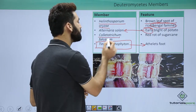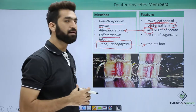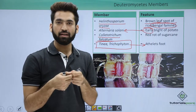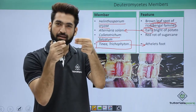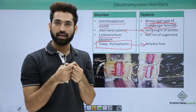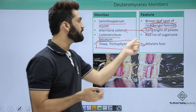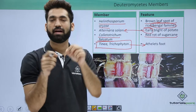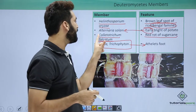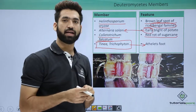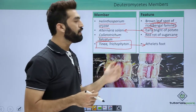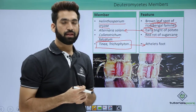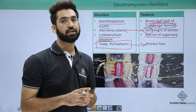An important disease is caused by Colletotrichum falcatum. When you chew sugarcane, you may notice red marks appearing inside — that is actually the fungus growing. These red marks represent red rot of sugarcane, which is the infection caused by Colletotrichum falcatum.